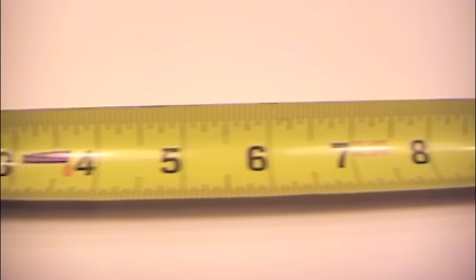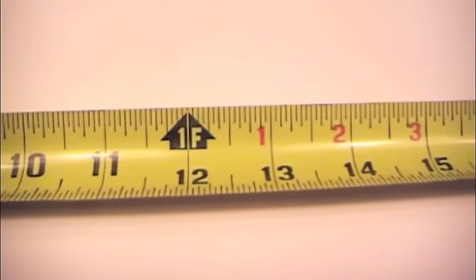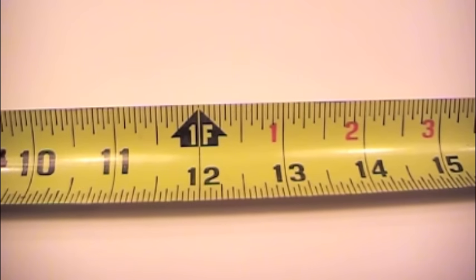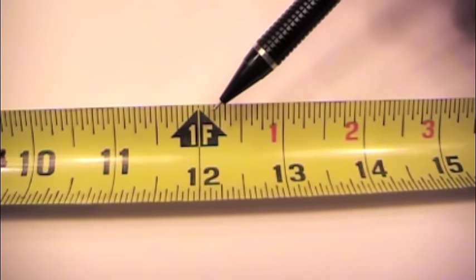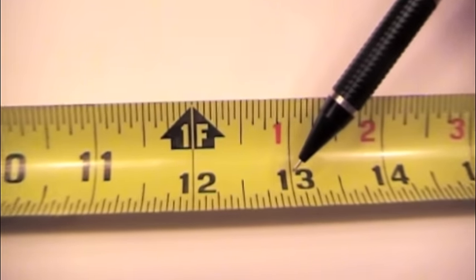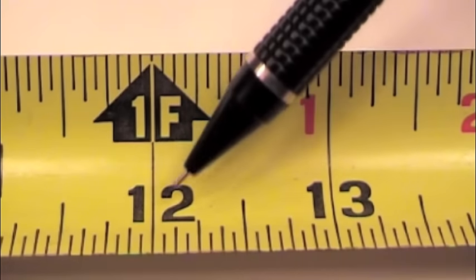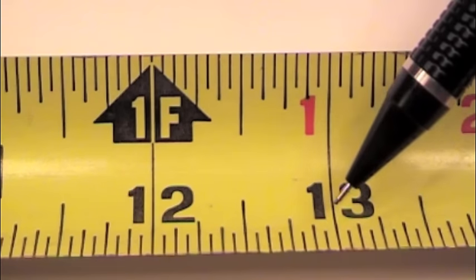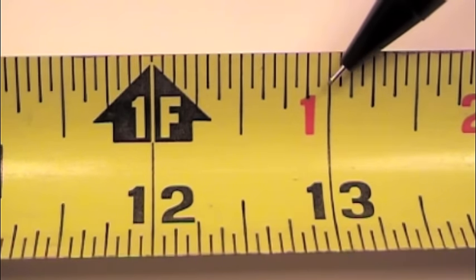When we extend it up to a foot, twelve inches, we see that we have a second set of numbers show up. We have twelve inches, which is also a foot, and we have thirteen inches, and then we also have a one inch. So twelve inches, thirteen inches, or one foot, one inch.